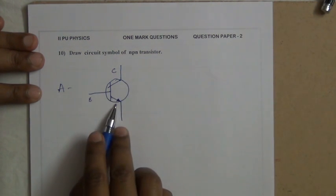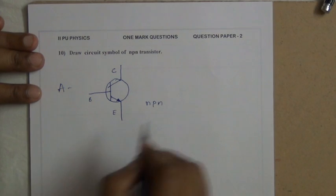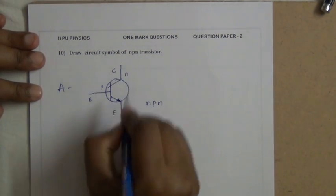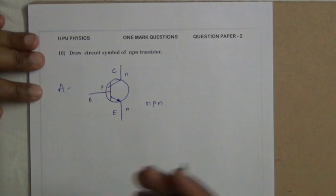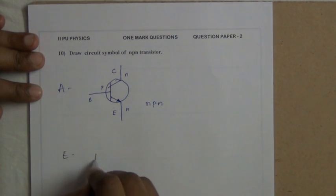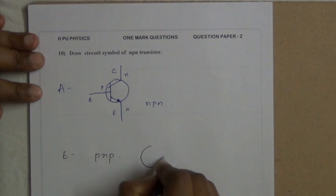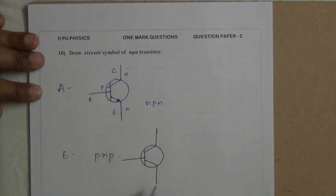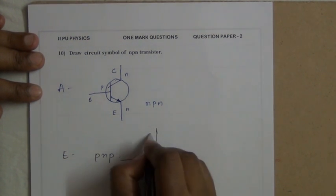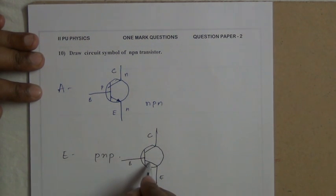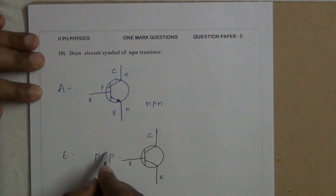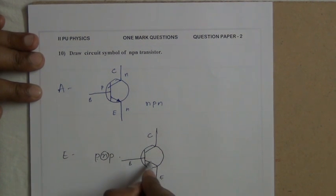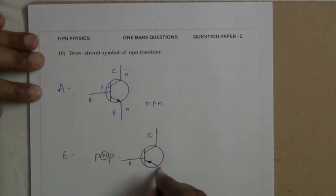This symbol represents the direction of current through a transistor. For an NPN transistor the arrow points outward on the emitter. For a PNP transistor — emitter, base, collector — the arrow mark is inside, since N is between two P's. This is the PNP transistor symbol.